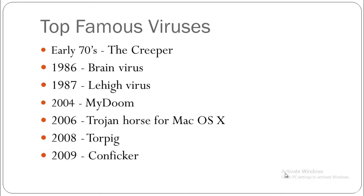Now let's look at the most dangerous viruses of all time. In the first half of the 1970s — or late 1960s to early 1970s — there were viruses called 'rabbits.' Rabbits cloned themselves and occupied system resources, slowing down productivity. They were among the most dangerous viruses before the early 1970s; they did not gather information, they just wanted to bring the system down. After that, in the early 1970s, we had the Creeper, which was capable of entering a network by itself and transferring a copy of itself to a system.